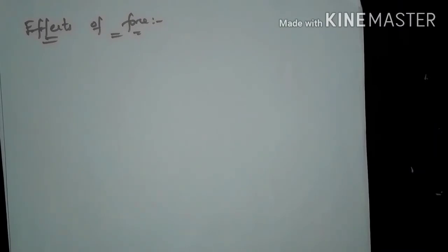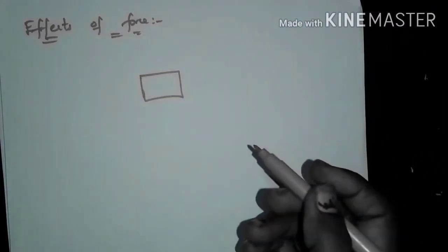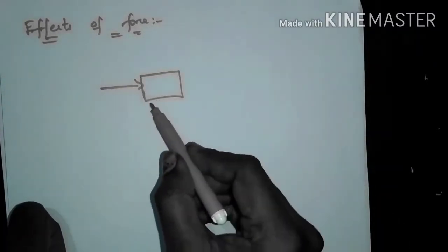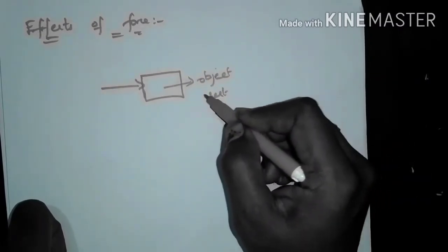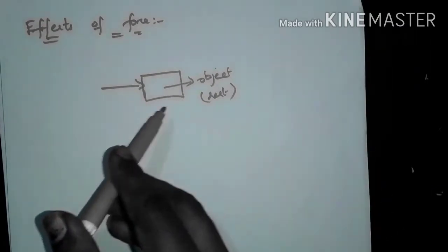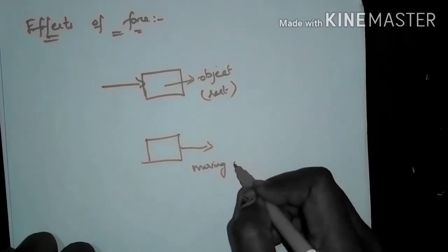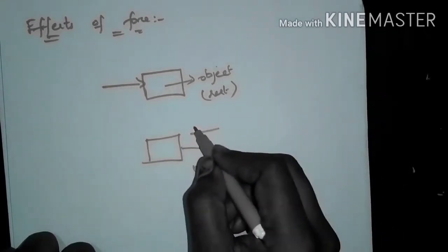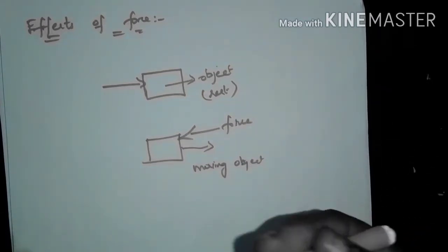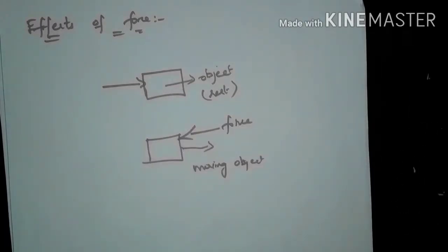There are some effects of force when applied on an object. If force is applied on an object at rest, it can make the object move — this is the first effect. If force is applied opposite to a moving object, it can reduce the speed or stop the object. Force can also accelerate an object, increase its speed, or change its direction of motion, depending on the direction in which the force is applied.